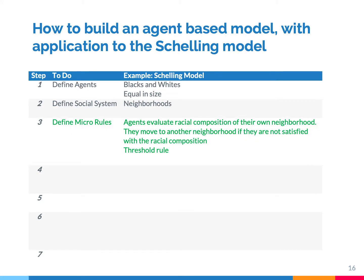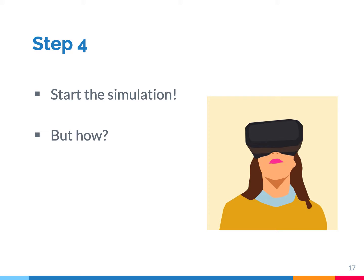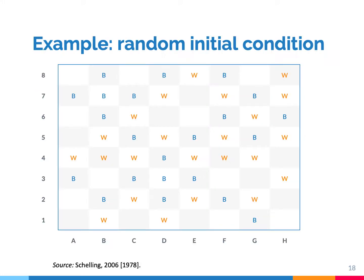So now you have your agent-based model almost complete. We have blacks and whites, they live in neighborhoods, they know what their neighborhood looks like, and they move away if less than one-third is from their own race. Thomas Schelling used a simple chess board. He then randomly distributed black and white pieces over the board. Each piece — each black and white actor — has neighbors. And if there are too many neighbors from a different race, then you move away. You can play this game yourself: all you need is a chess board and move unhappy pieces one by one.